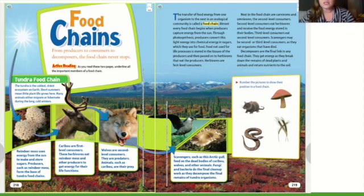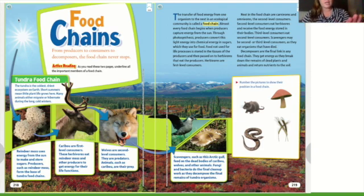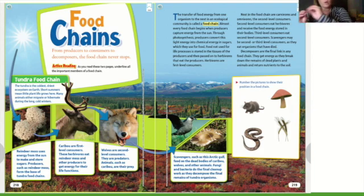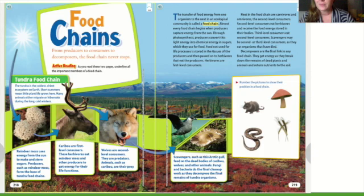Let's look at this tundra food chain. We start with our sun here, and we can see that arrow — that's our energy flow. The direction of the arrow shows the direction that energy is going from one thing to the next, so the direction is very important. The tundra is the coldest, driest ecosystem on Earth.